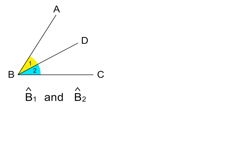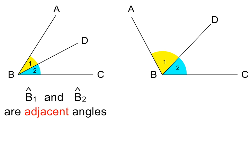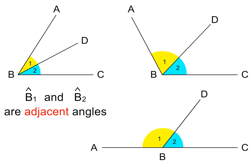Whenever we have angles next to each other, we call them adjacent angles. Here is another example of adjacent angles, and here is another example. Adjacent angles always share a common vertex — here the vertex is at B — and they also share one side or arm of the angles. Please pause to study this.